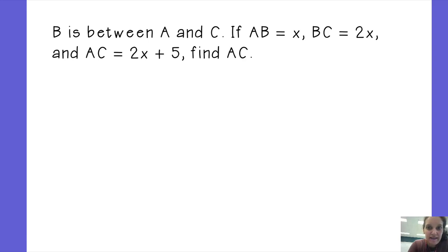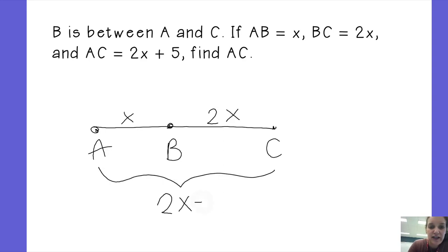B is between A and C. So here's A, C. B is going to be somewhere in between them, somewhere in the middle. It doesn't have to be anywhere in specific. It tells us AB is X, BC is 2X, and AC, the whole enchilada, is 2X plus 5.